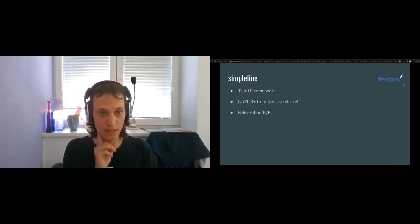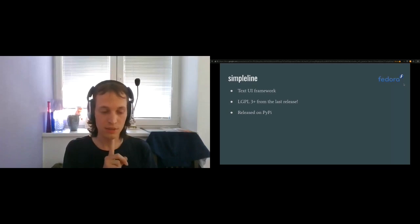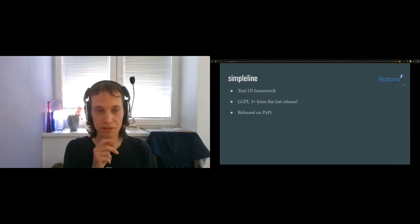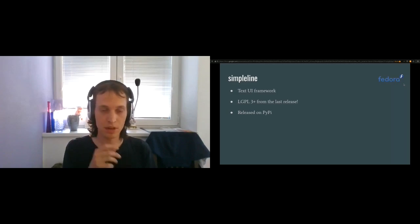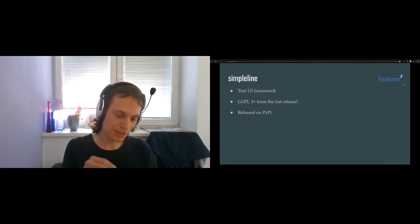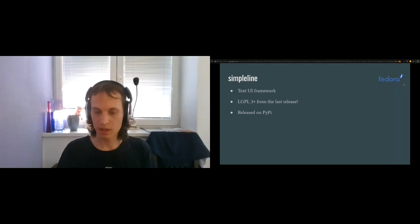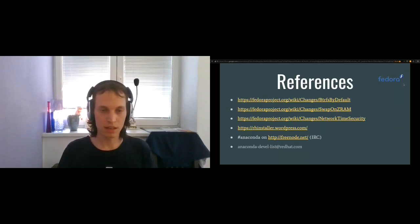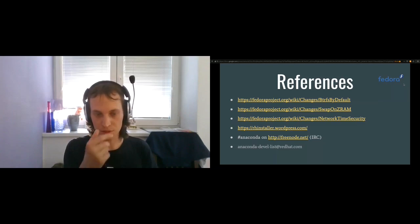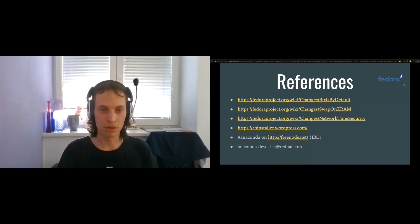The second library is Simpleline — it's basically the text UI from Anaconda extracted into a separate library. I'm the maintainer there. It's finally LGPL3+ — I was able to make the change from GPL2, which I don't think was appropriate for this library. It's also finally released on PyPI. So if you want to create a simple text UI for line-based devices — including remote consoles — this is a great library for that. That's everything from me.